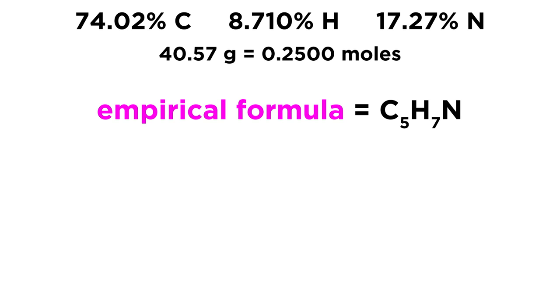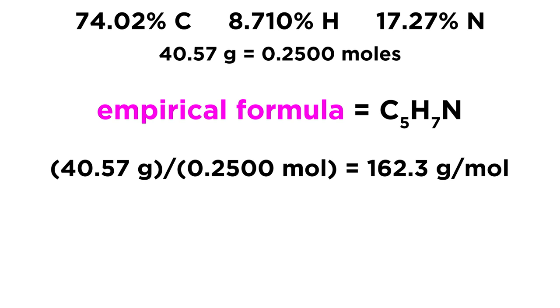But once again, we need the molecular formula. In order to get that, we need the molecular mass, or the molar mass. And so let's take this other bit of information we have. If we want to know the molar mass of nicotine in grams per mole, we have 40.57 grams, and we can just divide that by 0.2500 moles. That will give us a value in grams per mole. And so we get 162.3 grams per mole.